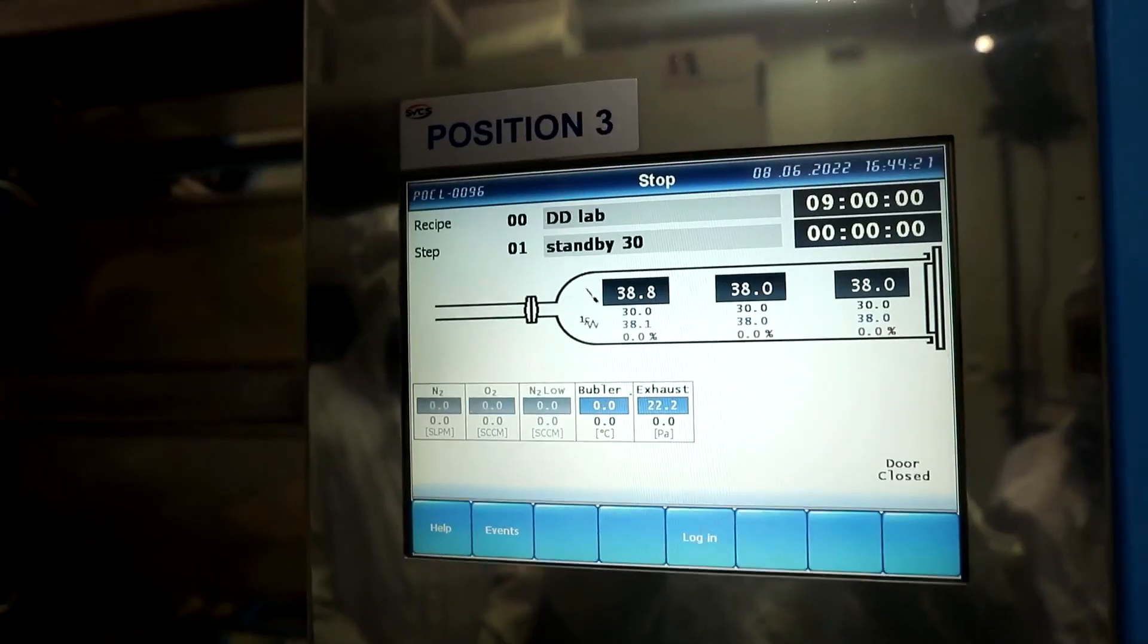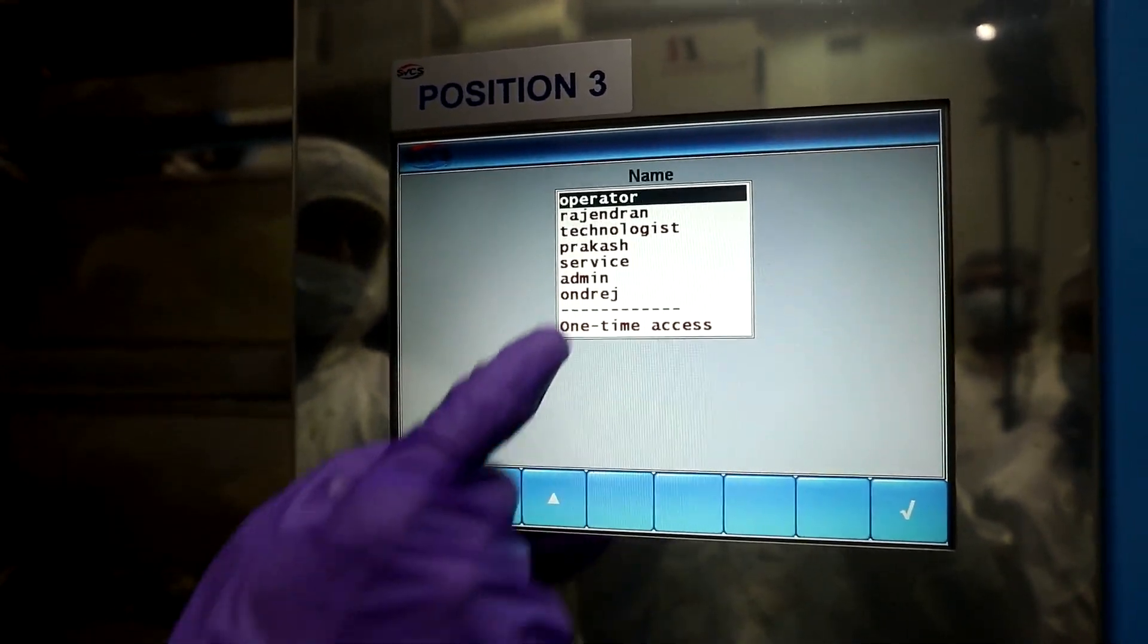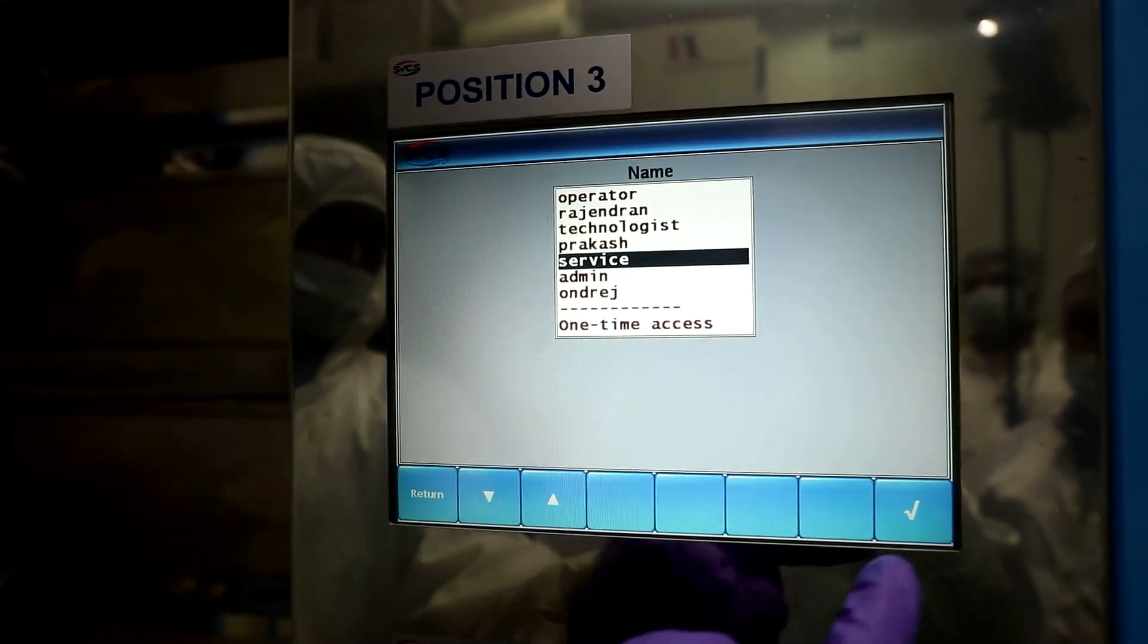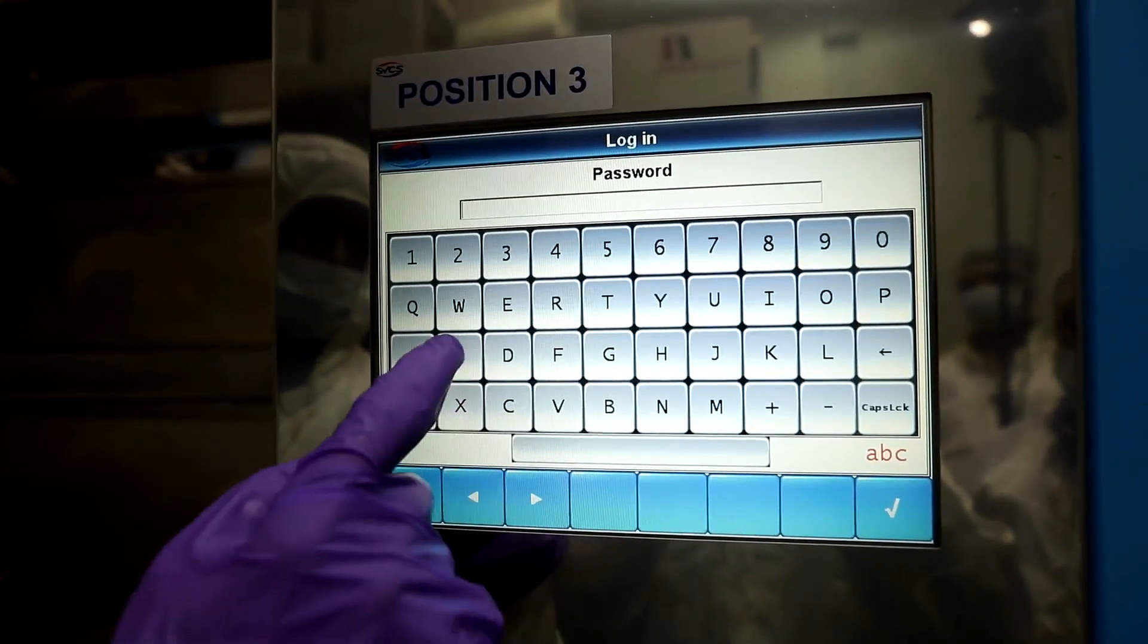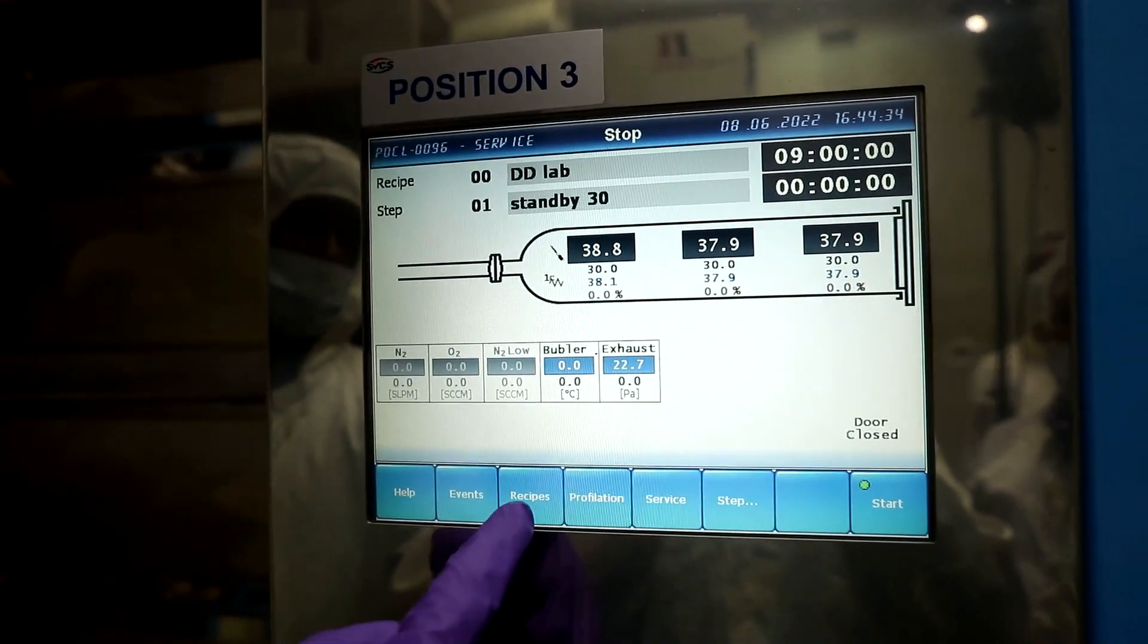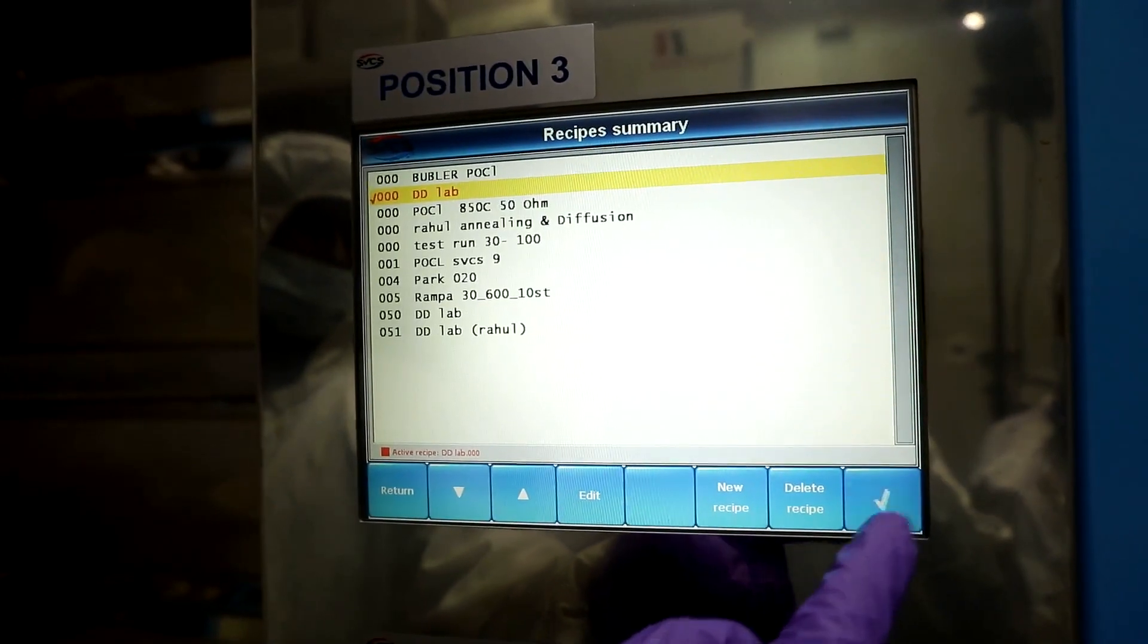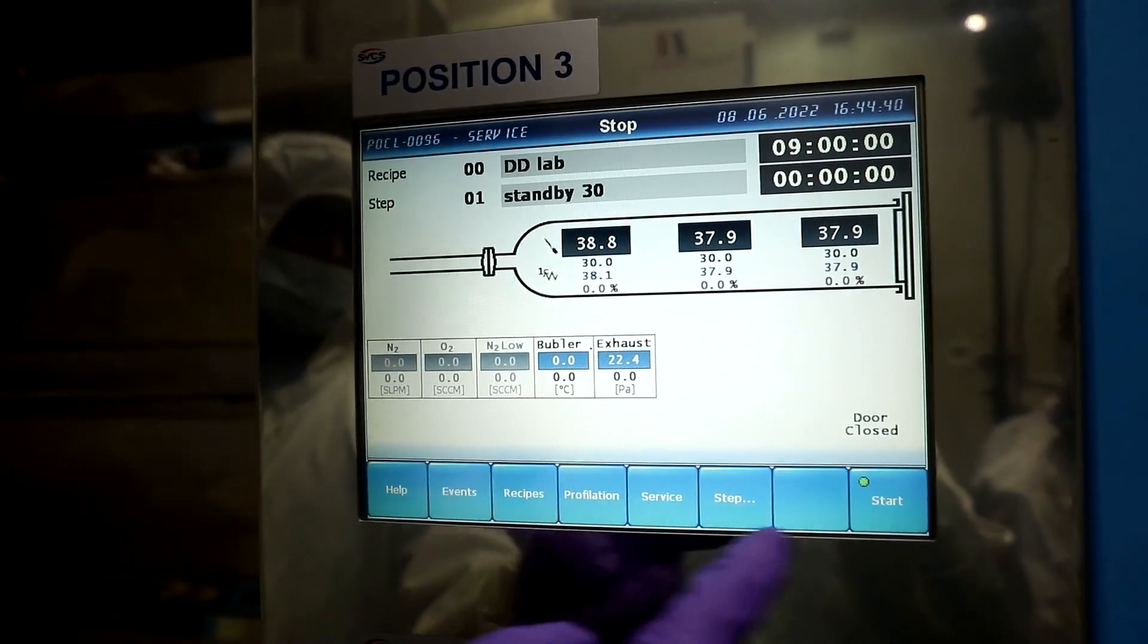Now when the display shows all open, we will open the phosphorus diffusion display. Go to login and press the service mode and enter the password. Now let us open the phosphorus diffusion process sequences. It contains all processing steps. We need to check process parameters here.